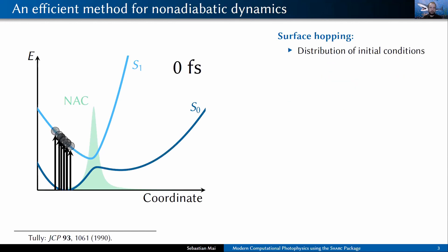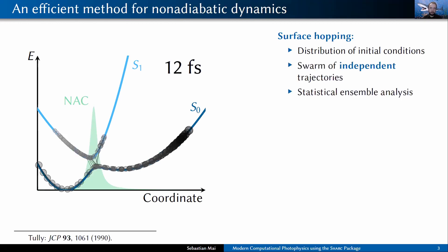We can also do so, and this is usually done, do this with an ensemble of initial conditions. Because then with this swarm of independent trajectories, we can gain statistical results like branching ratios and reaction rates that we could not get with a single trajectory.